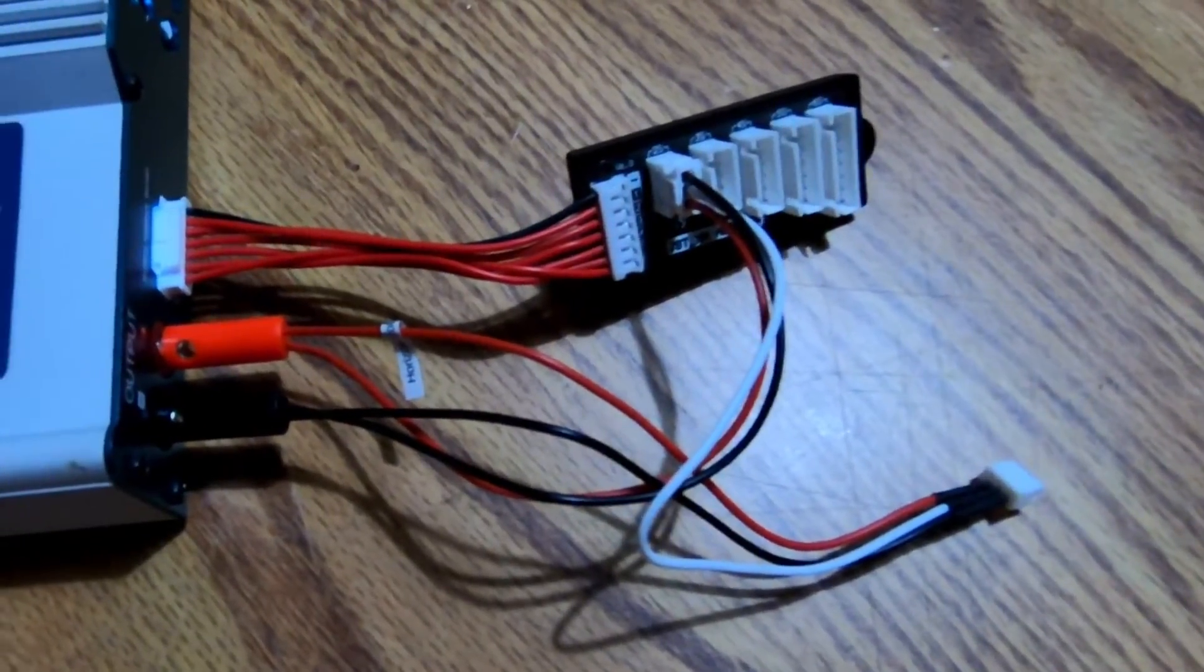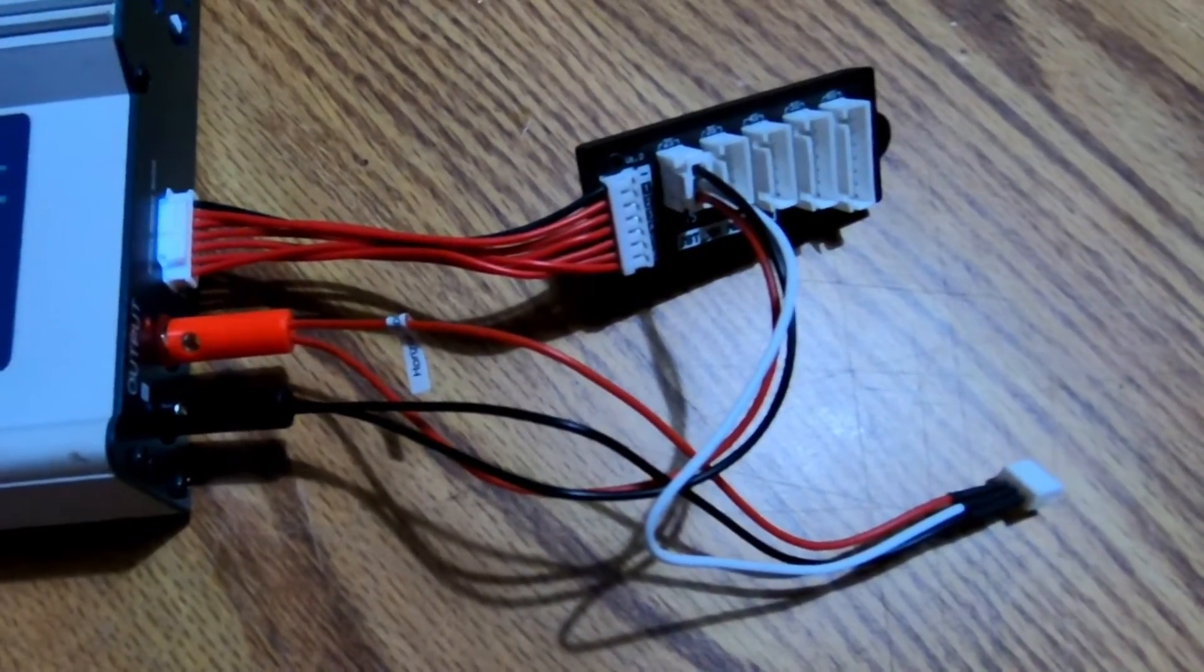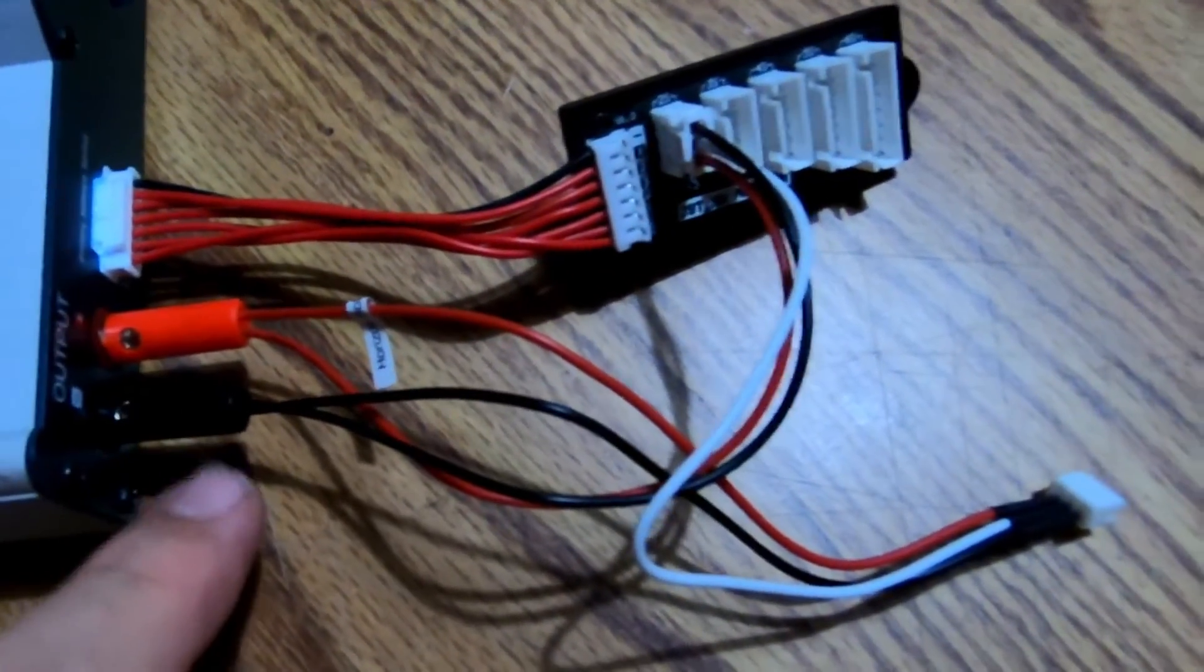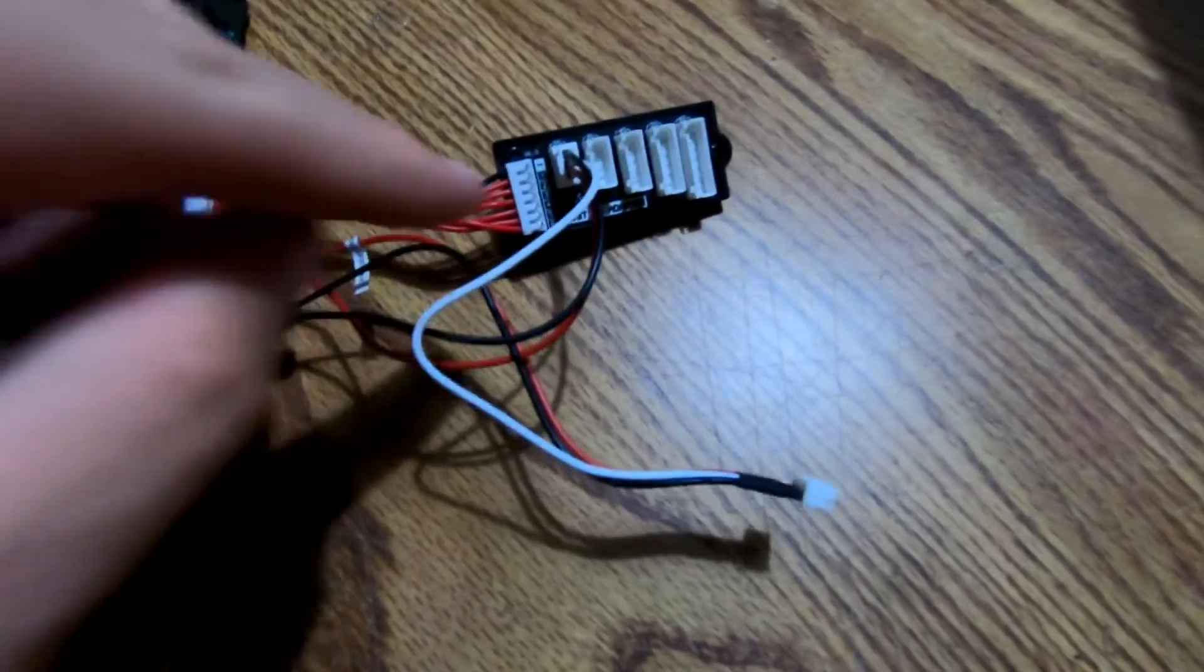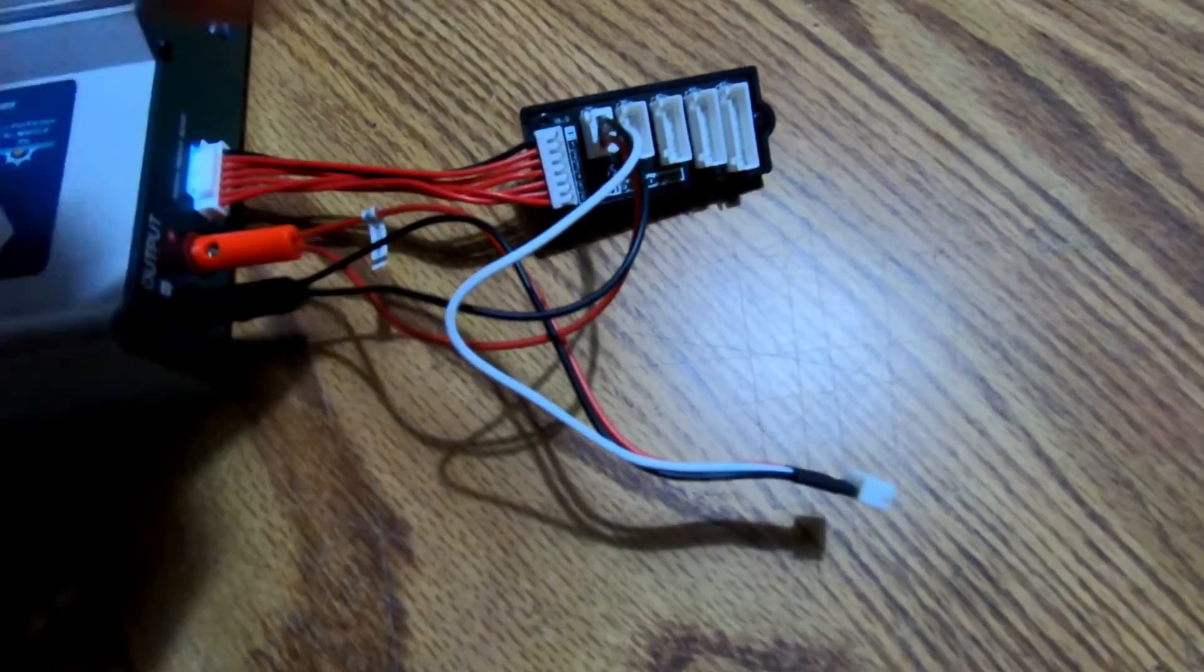This is the way I do it so I can balance charge my batteries. So I have the red and the black coming out. This is the side that will go to the battery, and then I have the other side of this wire plugged into my balance adapter.